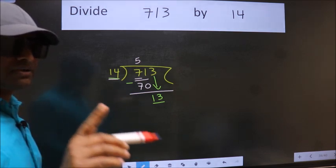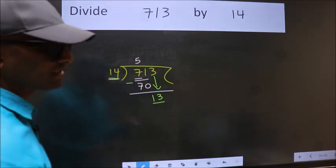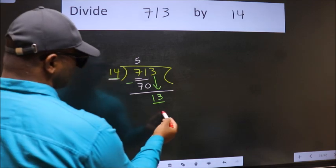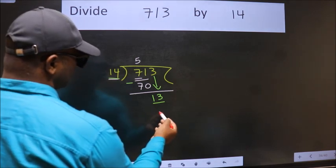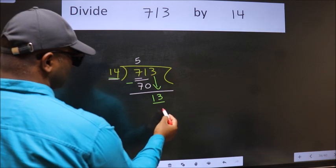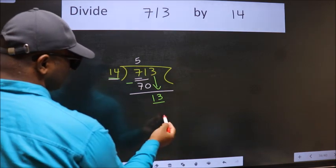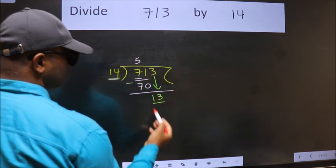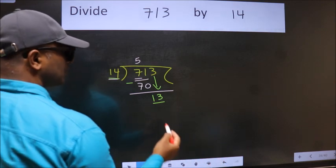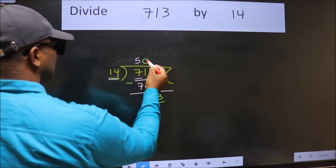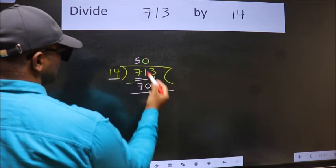Instead of that, what we should think of doing is which number should we take here? If I take 1, we will get 14. But 14 is larger than 13. So what we do is we take 0 here. So 14 into 0, 0.